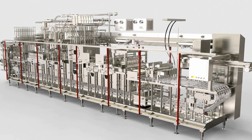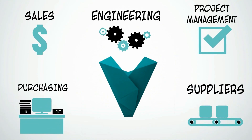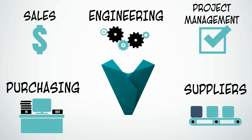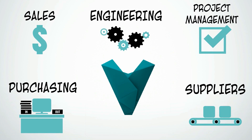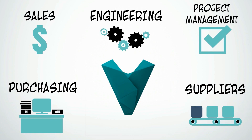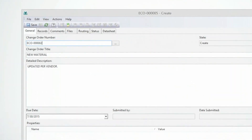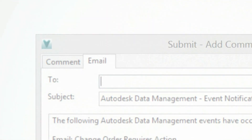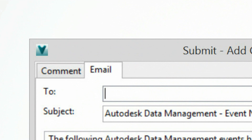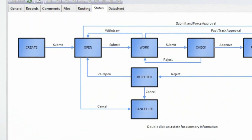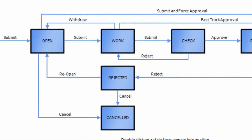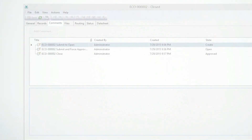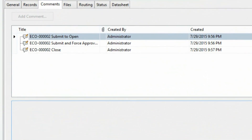Osgood needs to make changes to their designs quickly. They must also track those changes and ensure proper approval from the necessary groups within the company. Engineering change orders can be used to track modifications and notify stakeholders, providing a custom approval process along with an auditable trail of changes being made.